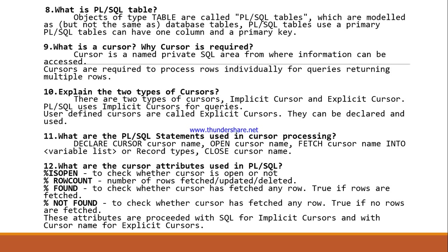Explain the two types of cursors. Cursors are of two types: one is the implicit cursor and the other is the explicit cursor. PL/SQL uses implicit cursors for queries automatically. User-defined cursors are called explicit cursors — they can be declared and used by the programmer.